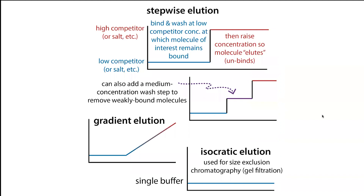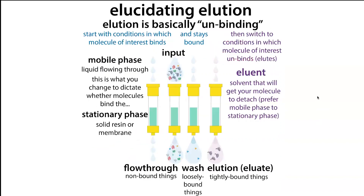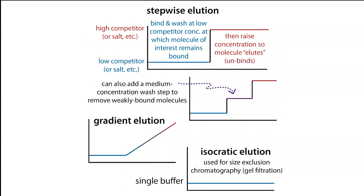In these elutions, we're pushing our molecule off by changing buffer conditions so that the molecule goes from wanting to be in the stationary phase — on the resin or membrane — to wanting to be in the liquid mobile phase, dissolving into the eluent and coming off as the eluate. But sometimes we use the term elution even when we're not actively pushing a molecule off — the molecule is just coming off, and we're not changing the buffer. We call this an isocratic elution.